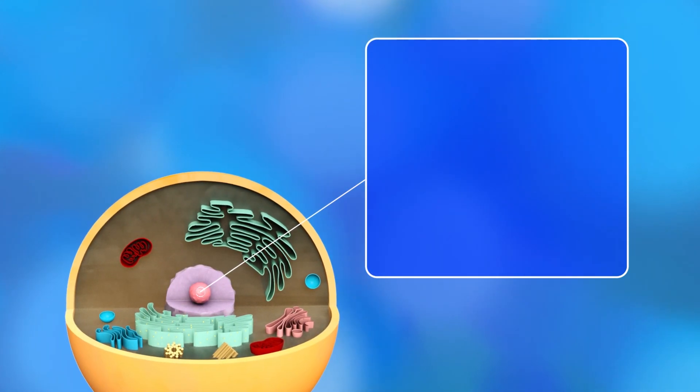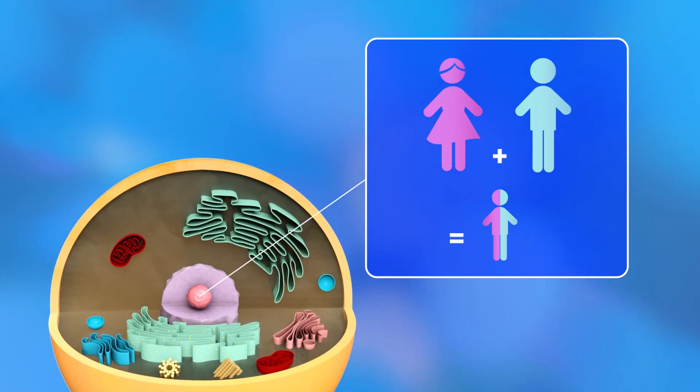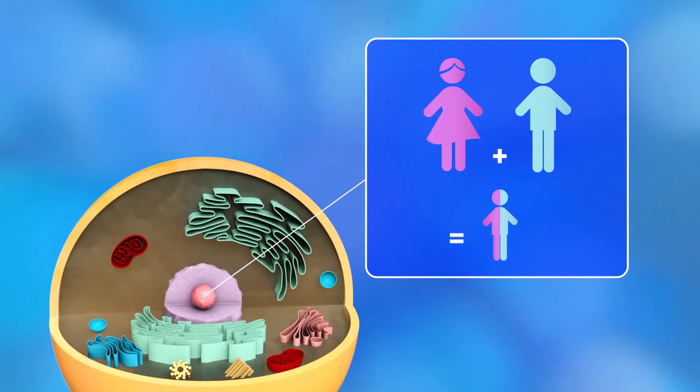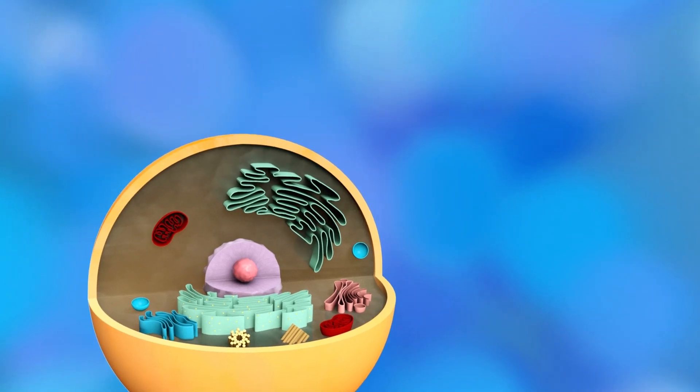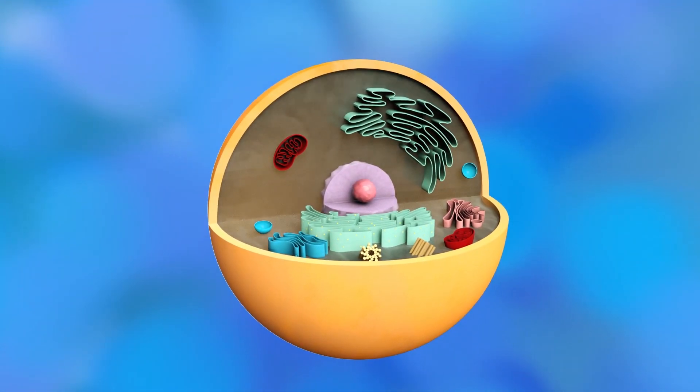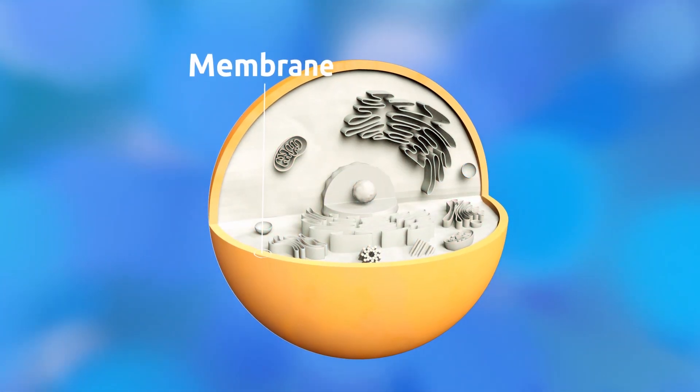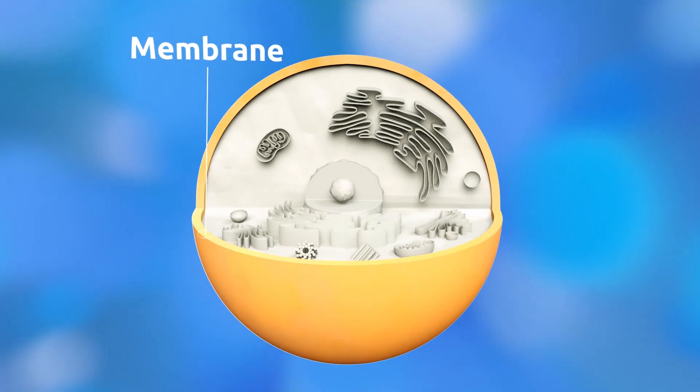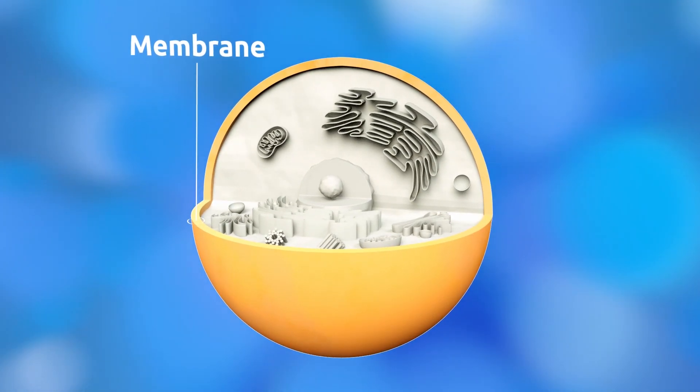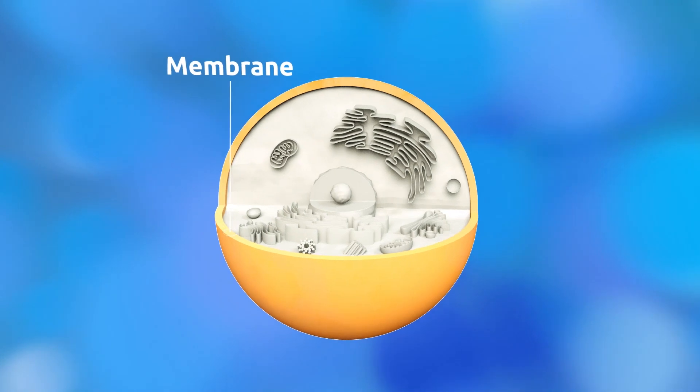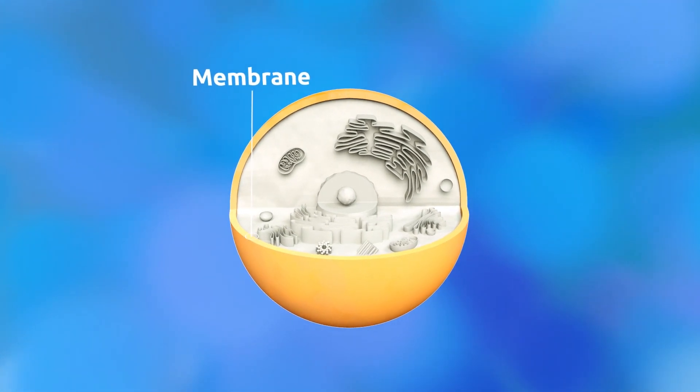When animals reproduce, the genetic material will pass on to their young. For this reason, baby animals will have the same characteristics. The membrane is a layer that surrounds and protects the cell from the outside environment. The main function of the membrane is to allow food in and release waste substances.